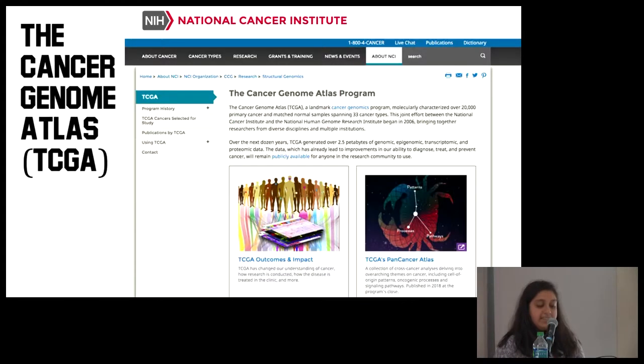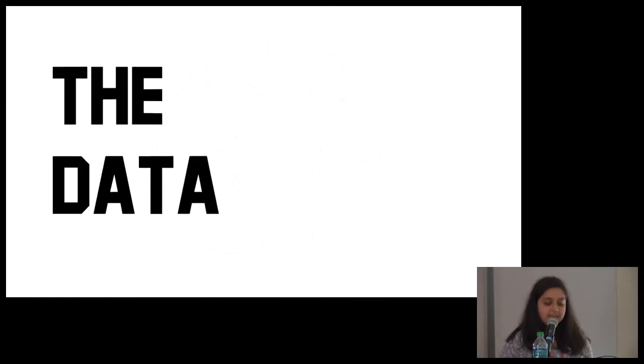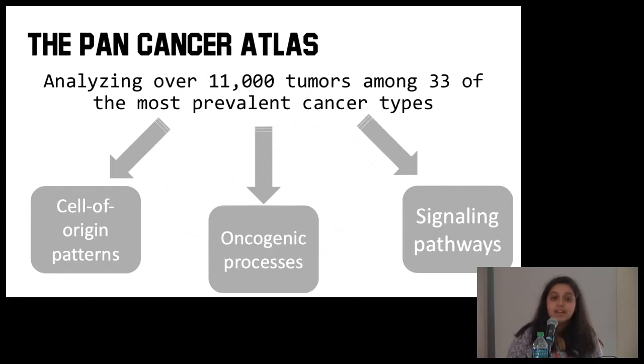So to get into the data. The data comes from the Cancer Genome Atlas, or the TCGA, which is a program that's under the National Institute of Health, specifically the National Cancer Institute. What the TCGA has done is they've compiled something called the Pan Cancer Atlas. So that means across cancers, they've analyzed over 11,000 tumors among 33 of the most prevalent cancer types. They have separated this information and this data into three big categories: cell-of-origin pathways, oncogenic processes, and signaling pathways. Anybody can go, it's all open source, find the data and download it and work with it.